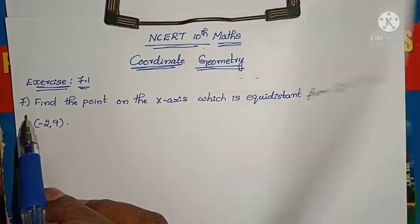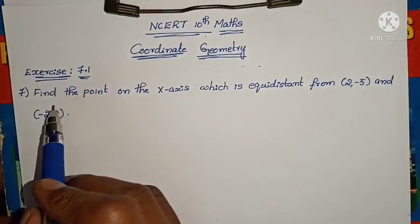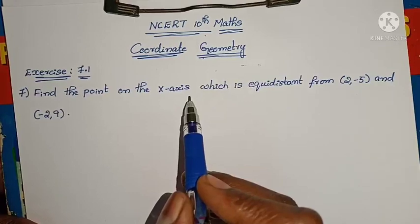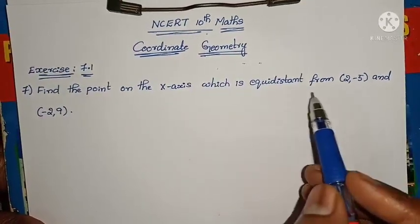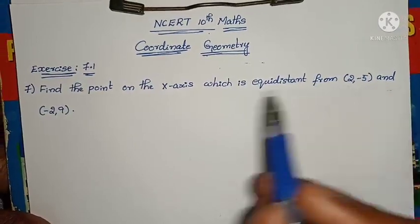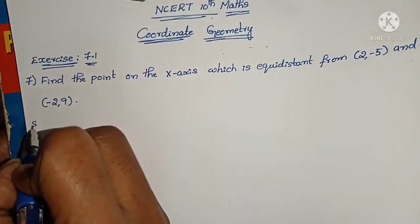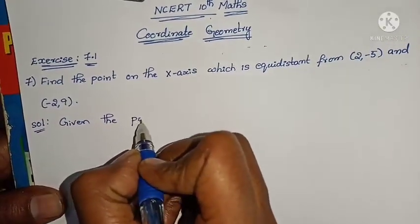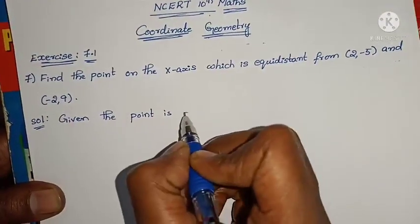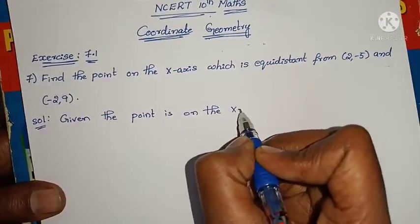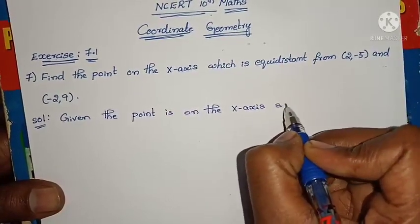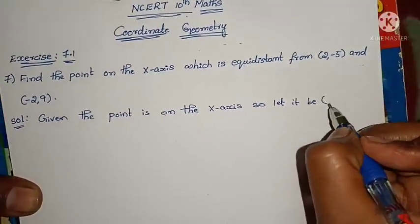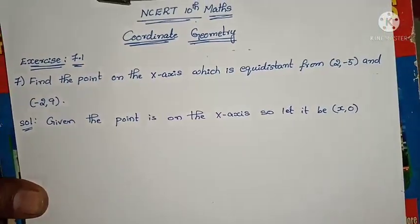In this exercise, 6 problems are already completed. See the 7th one — what is the question they have given? Find the point on the x-axis. The point is on the x-axis means the y-coordinate is 0, which is equidistant from (2, -5) and (-2, 9). So let it be x comma 0.